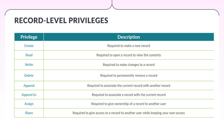Create is required to make a new record. Read is required to open a record to view the contents. Write is required to make changes to a record. Delete is required to permanently remove a record. Append is required to associate the current record with another record. For example, if users have append rights on a note, they can attach the note to an opportunity. In the case of many-to-many relationships, a user must have append privilege for both tables being associated or disassociated.